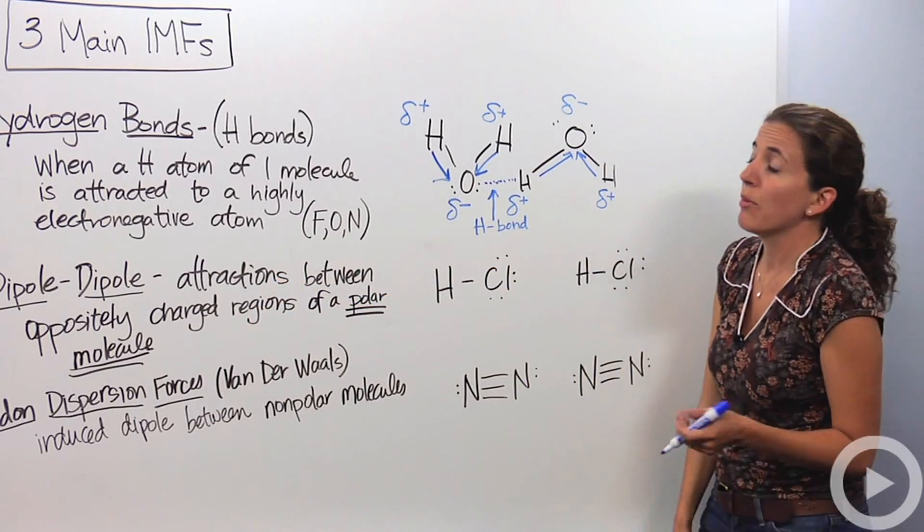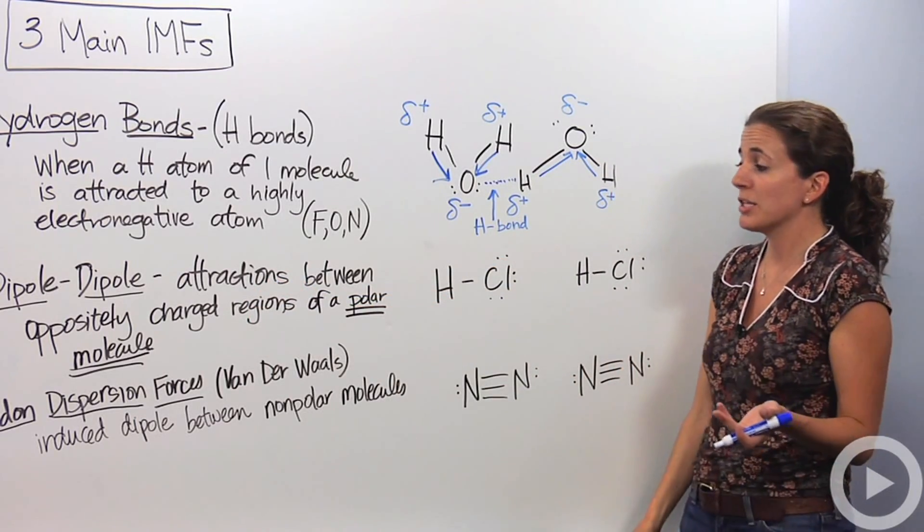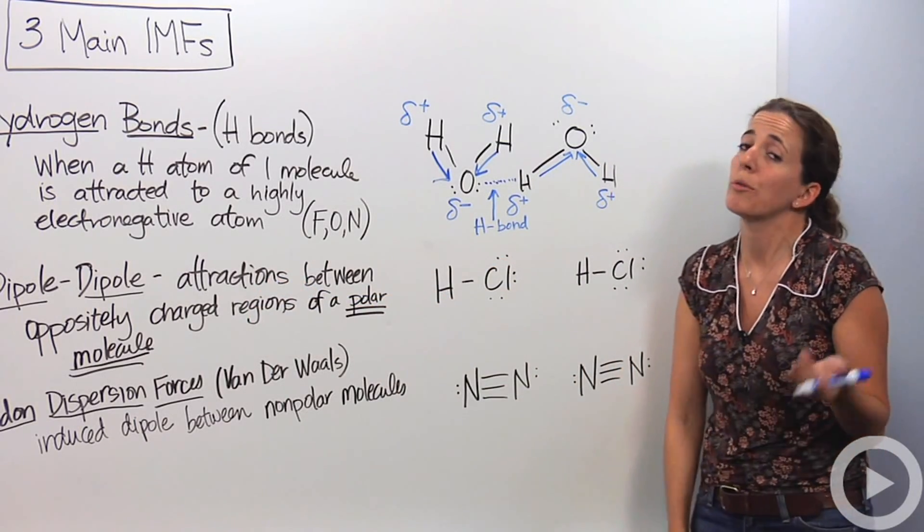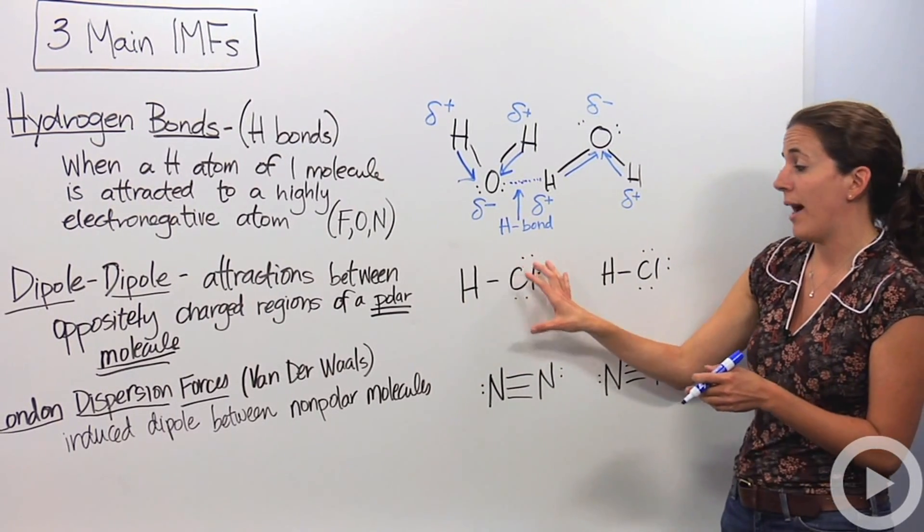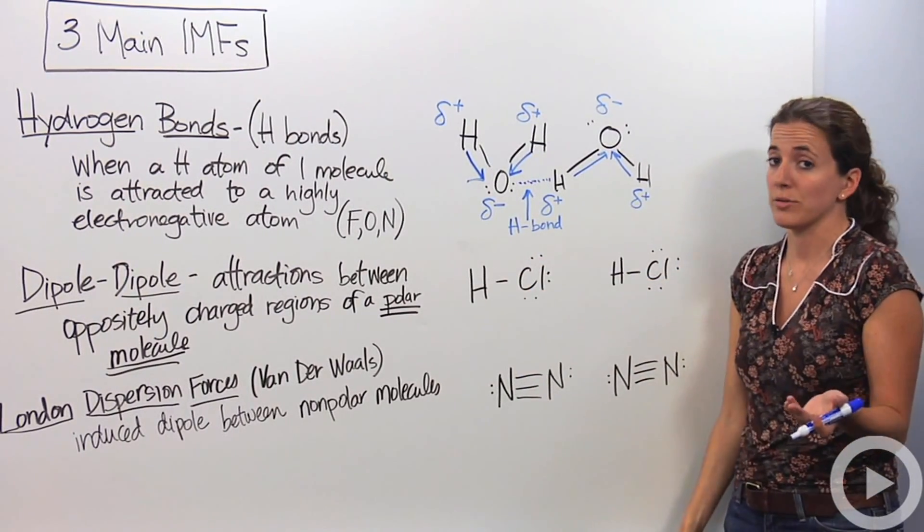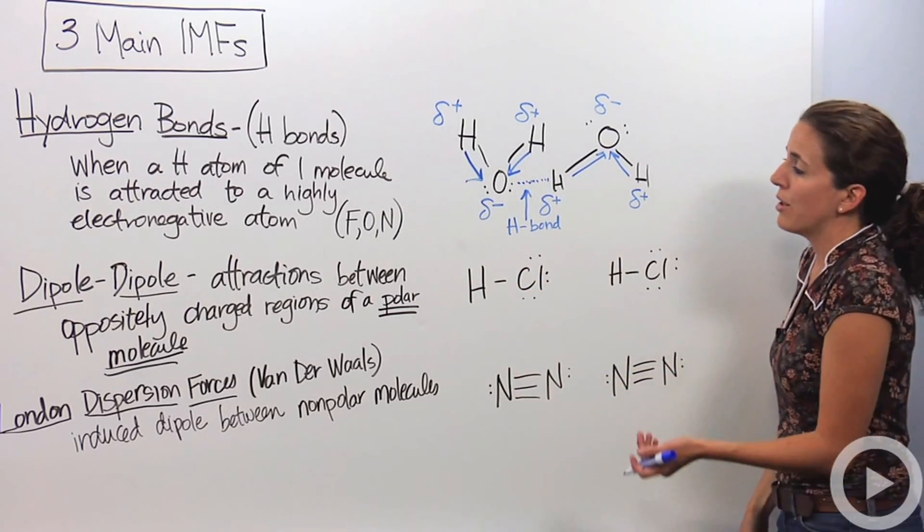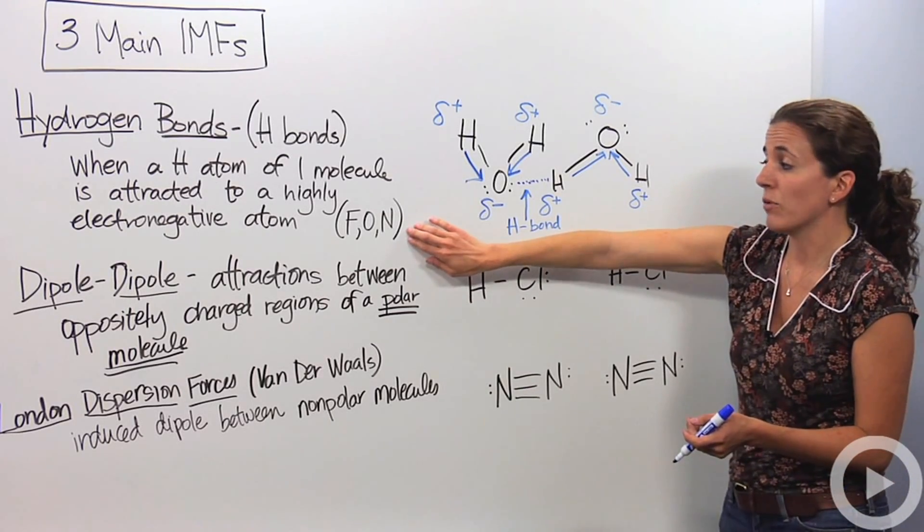Another type of IMF is dipole-dipole. This is an attraction between oppositely charged regions of a polar molecule. Now don't forget, in a polar bond, we have one that's highly electronegative atom bonded to another non-electronegative atom. So not as electronegative as fluorine, oxygen, and nitrogen, but pretty close.